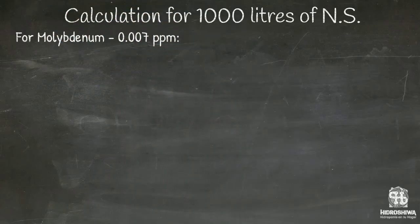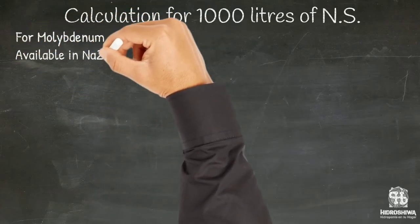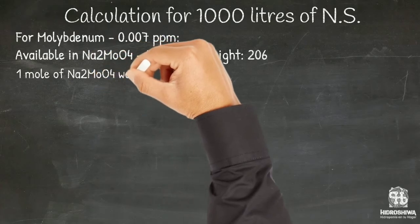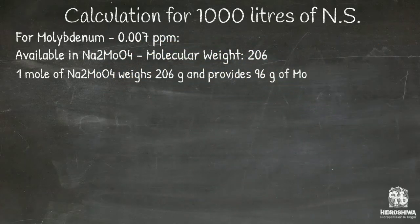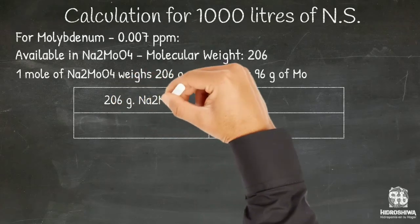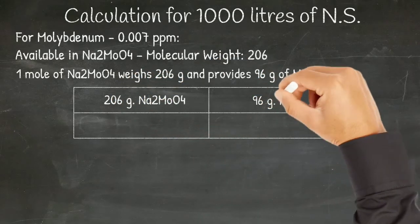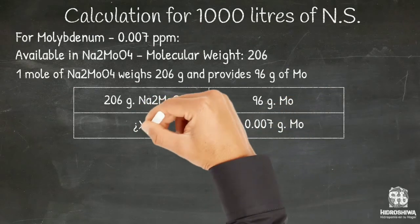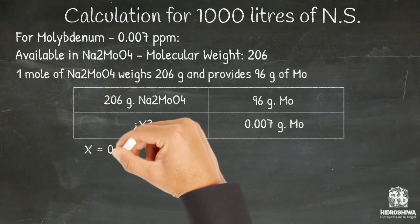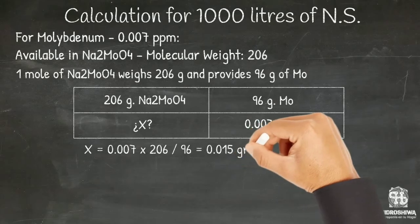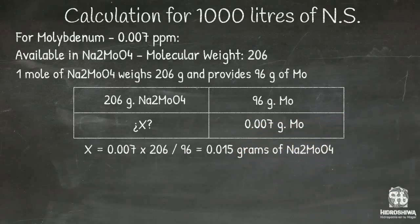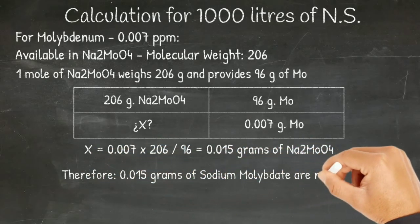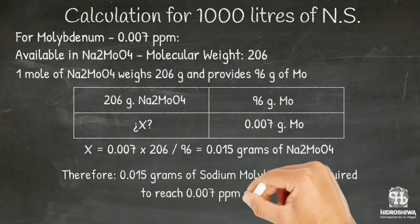Finally, molybdenum is available in sodium molybdate, which has a molecular weight of 206. One mole weighs 206 grams and provides 96 grams of molybdenum. We calculate the amount of sodium molybdate to provide 0.007 grams of molybdenum: X equals 0.007 times 206 divided by 96, which equals 0.015 grams of sodium molybdate. Therefore, 0.015 grams of sodium molybdate provide 0.007 parts per million of molybdenum.